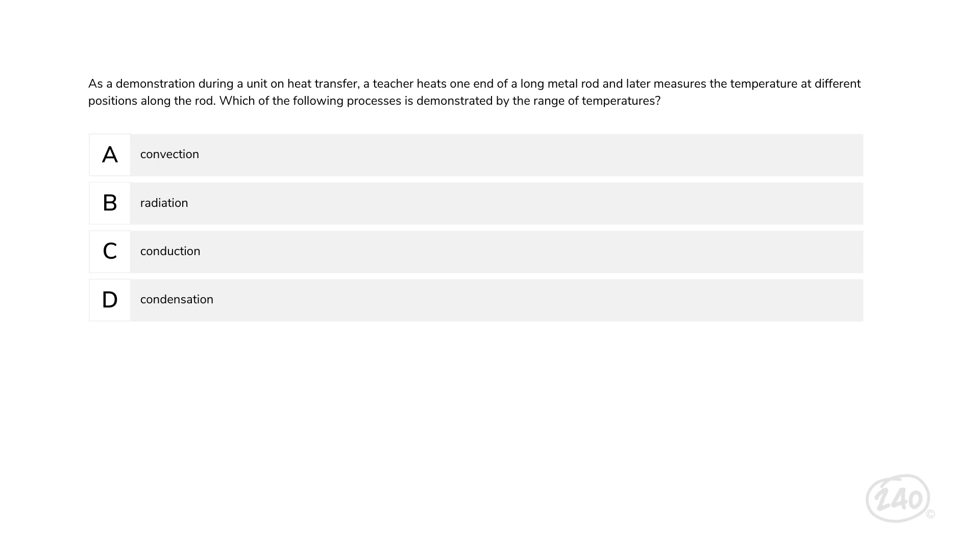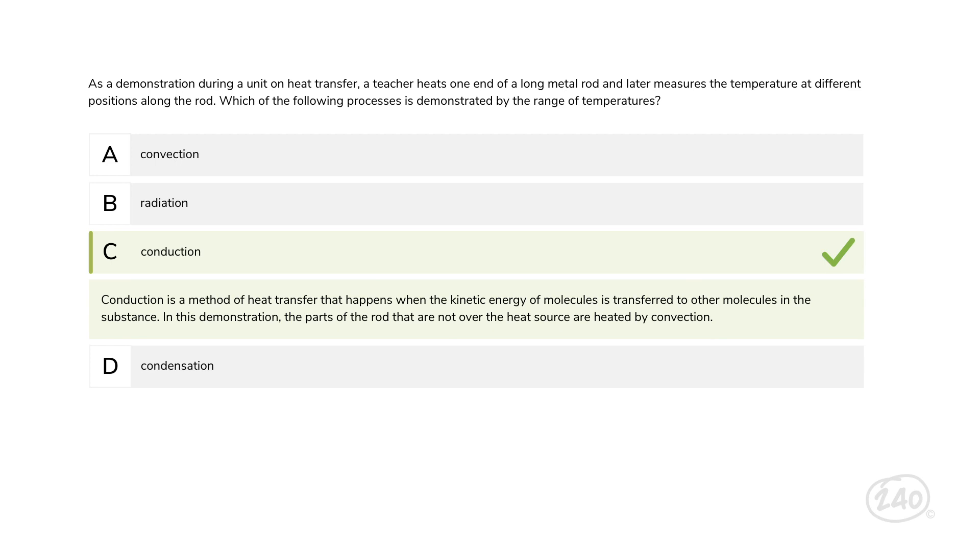On to domain 2, science. Earlier, we looked at types of energy transfer. Let's see how that would look in question form. As a demonstration during a unit on heat transfer, a teacher heats one end of a long metal rod and later measures the temperature at different positions along the rod. Which of the following processes is demonstrated by the range of temperatures? Conduction is a method of heat transfer that happens when the kinetic energy of molecules is transferred to other molecules in the substance. In this demonstration, the parts of the heat transfer rod that are not over the heat source are heated by conduction.